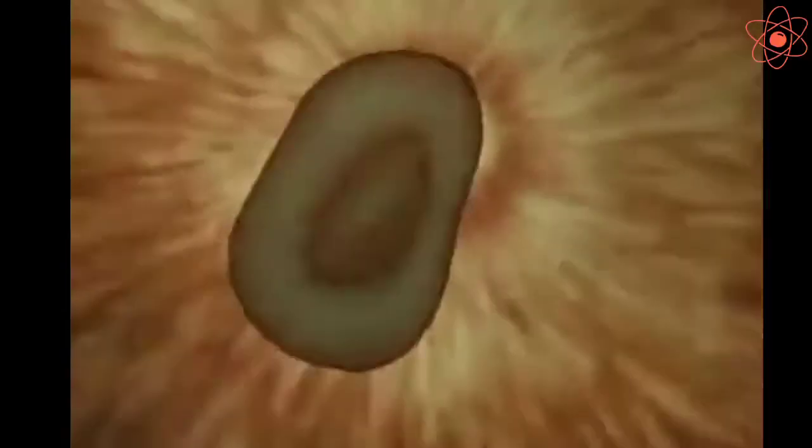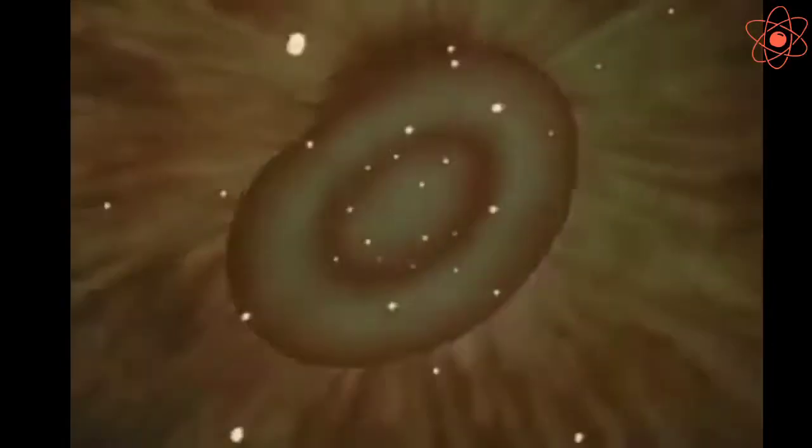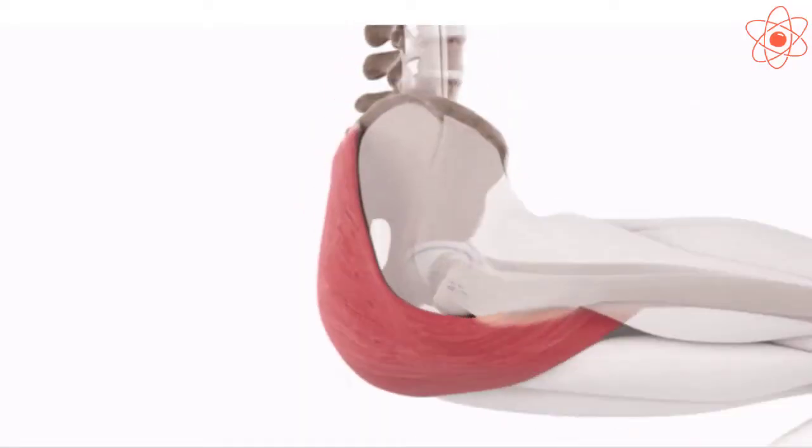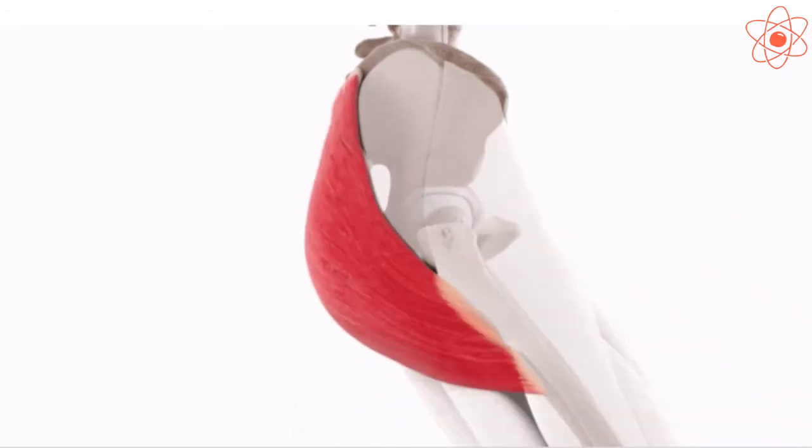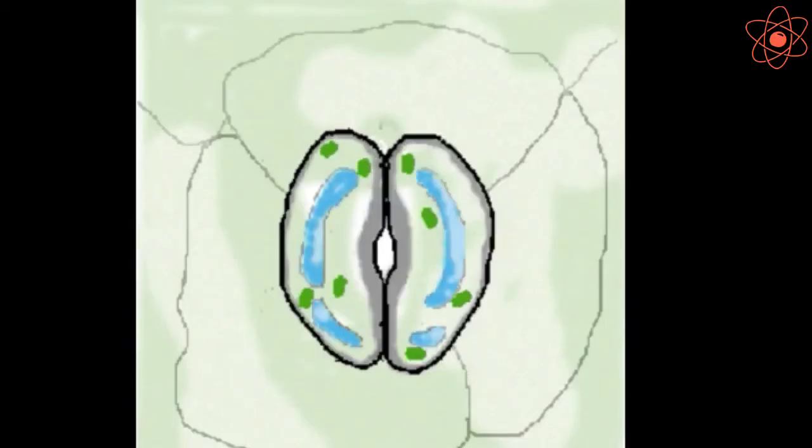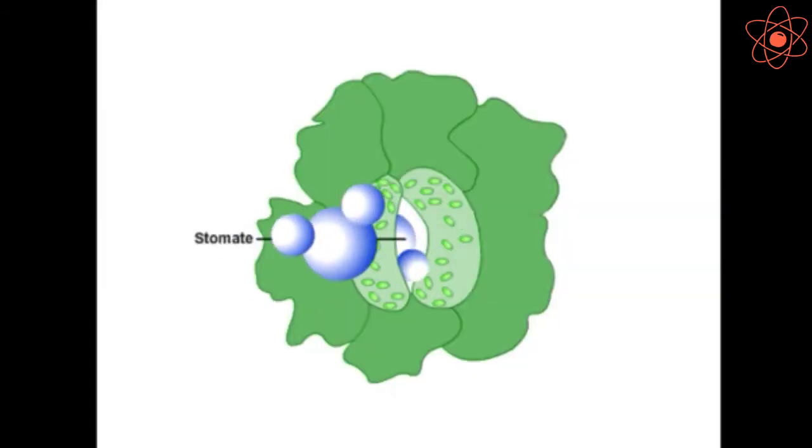Human red blood cells are shaped like a disc to transport oxygen. Muscle cells are spindle shaped to help in movement by contracting and relaxing. In plants, guard cells are bean shaped to open and close the pores during exchange of gases.